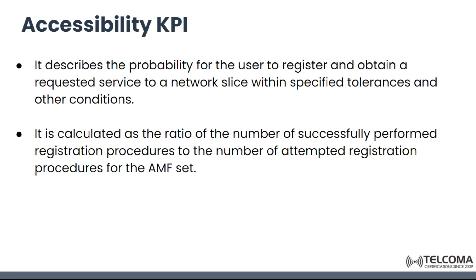Accessibility KPI describes the probability for the user to register and obtain a requested service to a network slice within specified tolerances and other conditions. It is calculated as the ratio of number of successfully performed registration procedures to the number of attempted registration procedures for the AMF set. AMF stands for Accessing Mobility Management Function set.